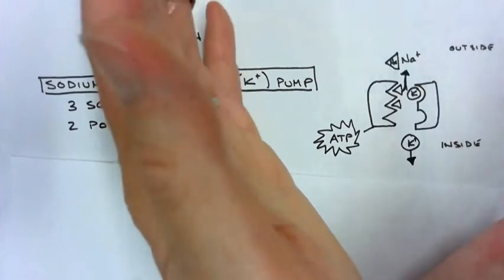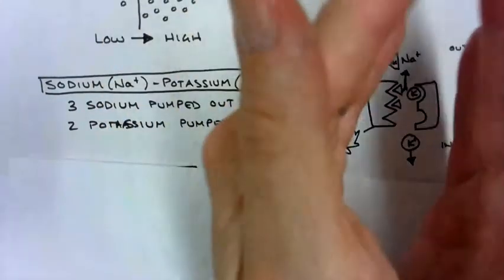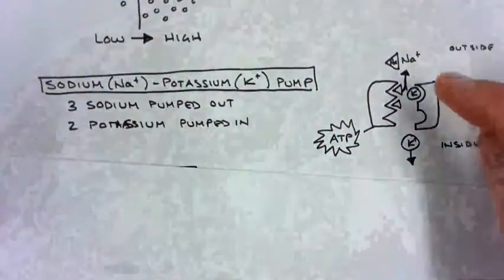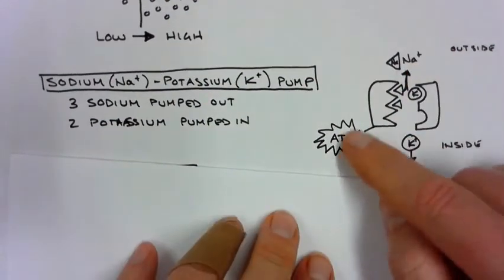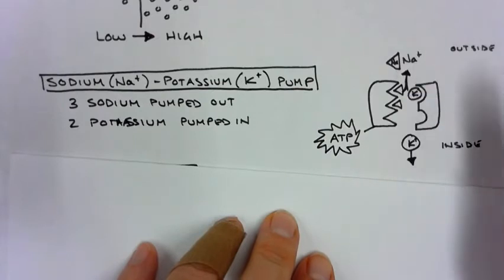Simultaneously, two molecules of potassium come in, it closes, and then opens the other side. Na is the symbol for sodium. K is the symbol for potassium. It does require energy in order for this to operate.